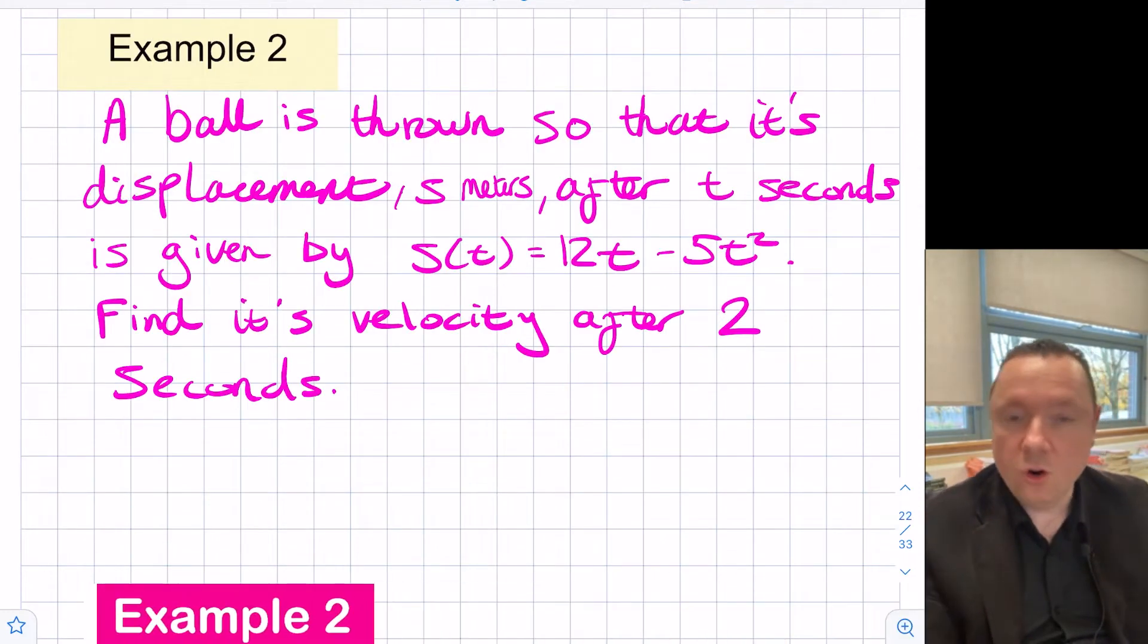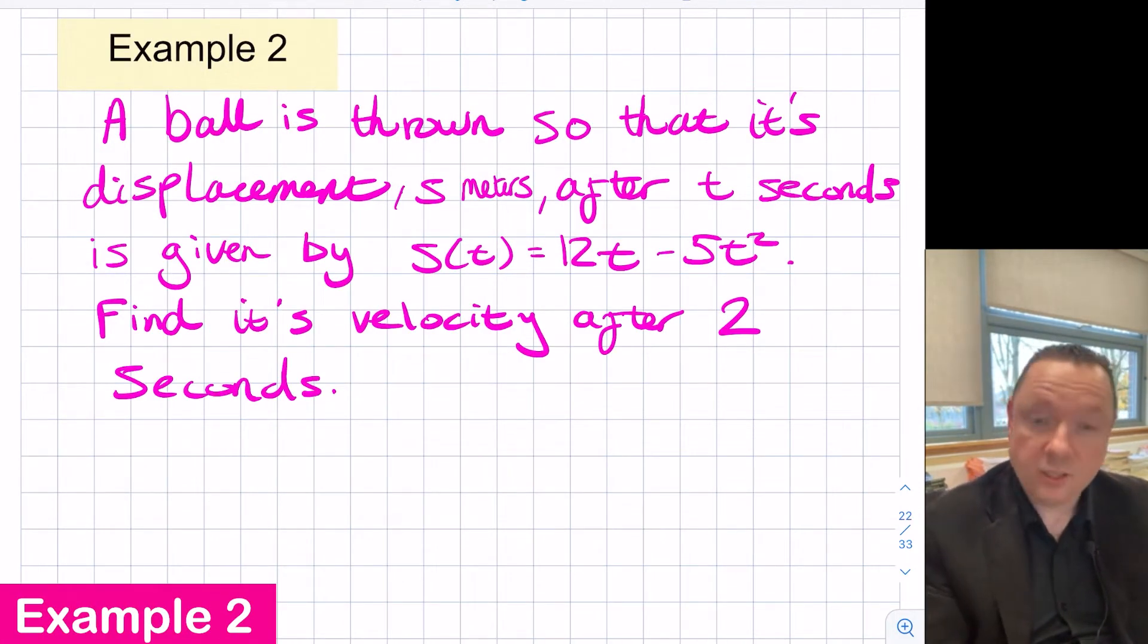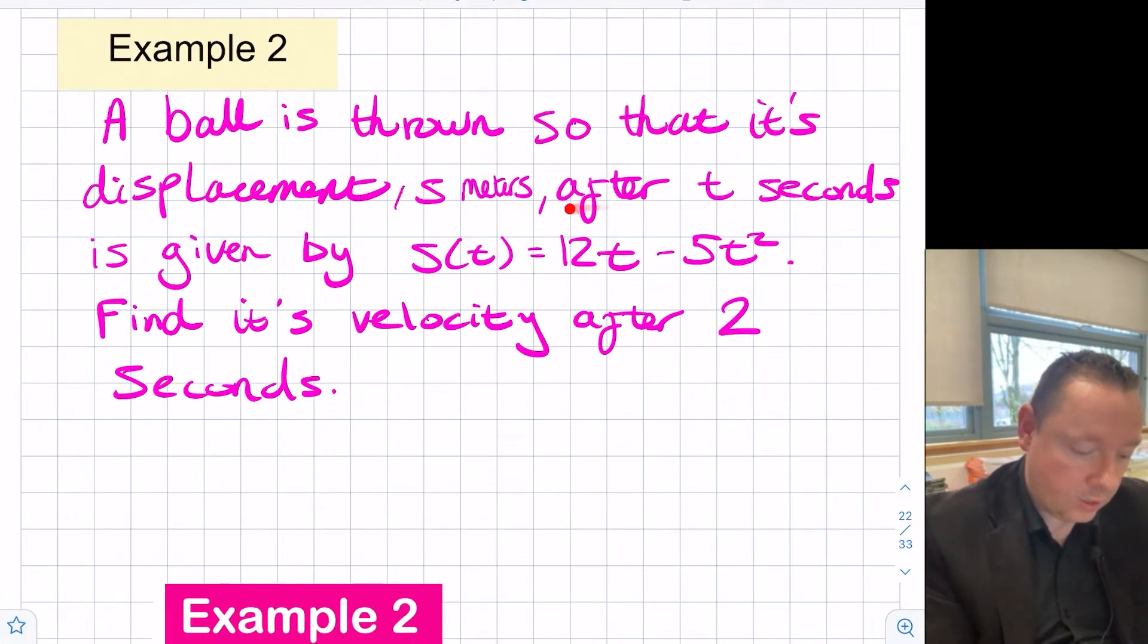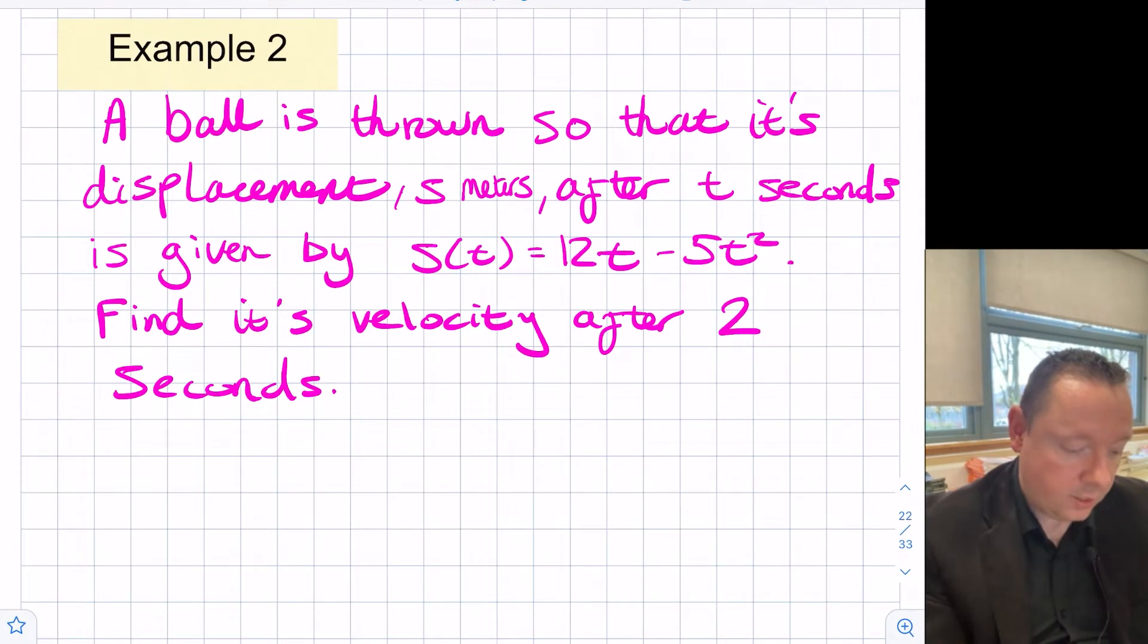A ball is thrown so that its displacement, s meters after t seconds, is given by this formula: s of t is 12t minus 5t squared. We'll find the velocity after two seconds. So we know that the velocity with respect to time is equal to differentiating the displacement with respect to time.